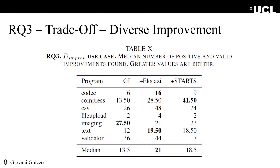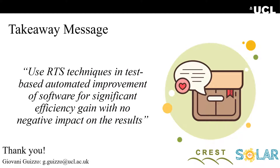All in all, in most of the cases considered — 19 out of 21 comparisons — using GI with RTS provides better results than traditional GI without RTS. You can find more and better patches, considerably quicker. The takeaway message is: use RTS techniques in test-based automated improvement of software for significant efficiency gain with no negative impact on the results. This concludes my talk. Thanks for watching, and if you have any questions, please do not hesitate to contact me.